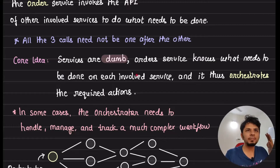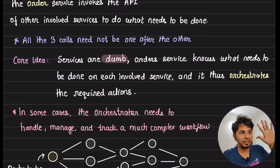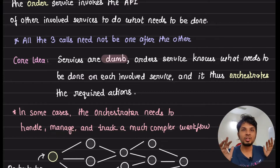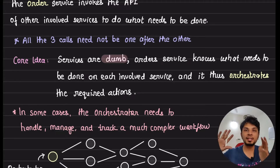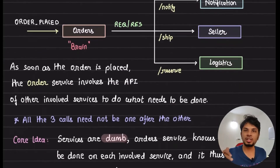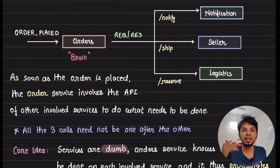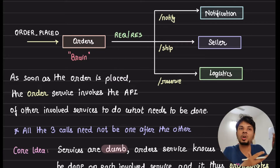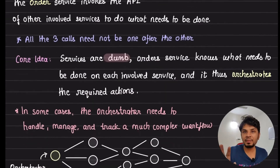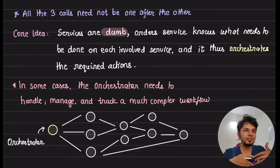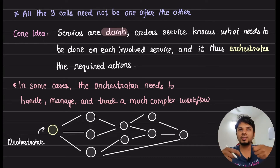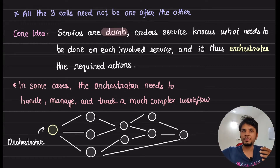So here the order service is the brain doing all the coordination. The other three services are dumb — the order service tells them exactly what to do and when. They are not independent; they cannot decide on their own to send a notification or assign a delivery partner. Someone — the coordinator, the order service — tells them. In real-world complex businesses, workflows can also get very complex, requiring conditions like 'when these two are done, trigger the third' — and you need a coordinator to manage that.